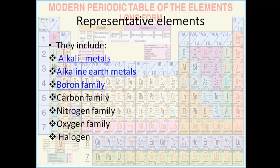In previous sessions we have already understood the alkaline metals, that is group number one, and the alkaline earth metals, that is group number two. In this session we shall understand the boron family, that is group number 13, under the roof of representative elements.